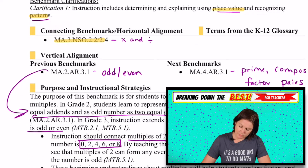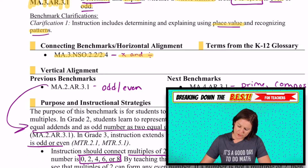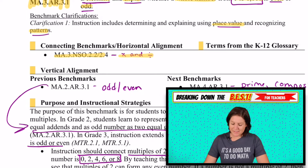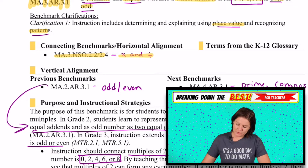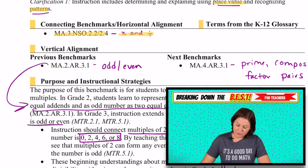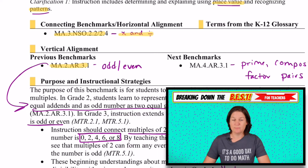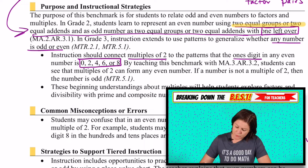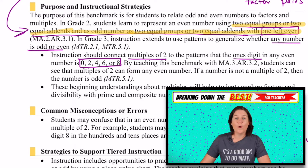The connecting benchmark would be multiplication and division, because you're seeing patterns of multiples of two — 2.2 and 2.4. But the real alignment comes with our vertical alignment in second grade, which is odd and even numbers. They represented an even number with two equal groups or equal add-ins, and an odd number as two equal groups or two equal add-ins plus one left over.